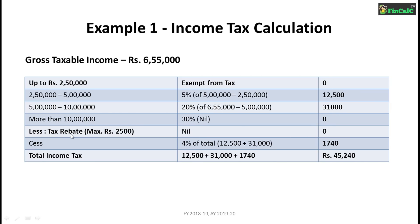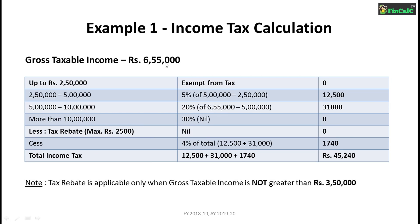We add all these components together. There is also a tax rebate, but it is applicable only if your gross taxable income is less than or equal to ₹3,50,000 — so in this example, the tax rebate is not applicable. The health and education cess, which was 3% in the previous year, has been increased to 4%. So 4% is applied to the total of ₹12,500 and ₹31,000, which comes to approximately ₹1,740. Adding all components, the total income tax liability comes to ₹45,240.